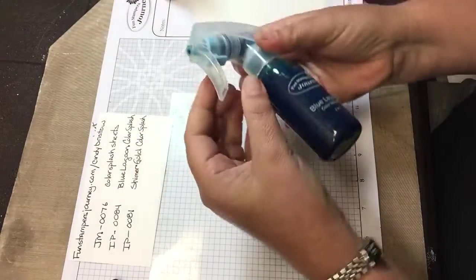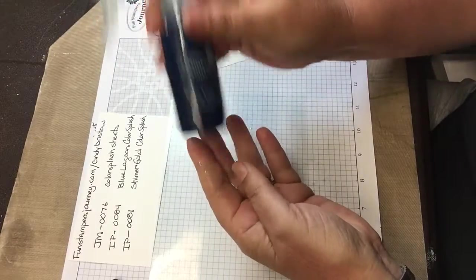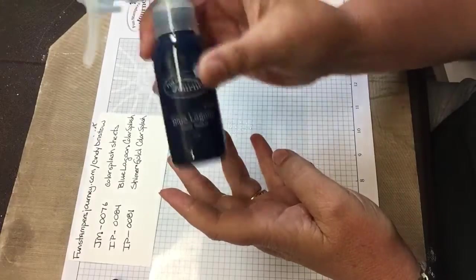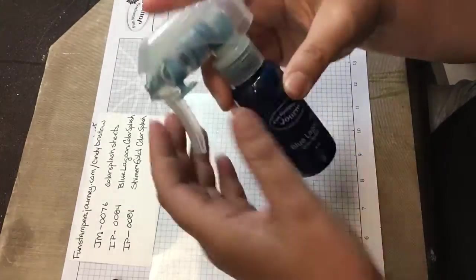Then you shake your color splashes up. Make sure you shake them up because the pigment and all of the mica flakes and everything stay in the bottom and you want all that goodness floating around in here when you spray it.